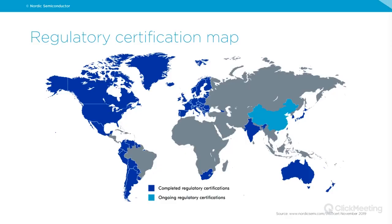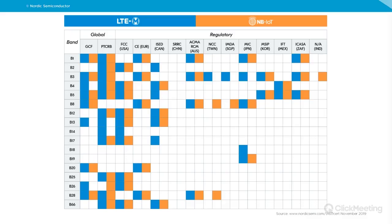Certifications are really important for cellular IoT. Our regulatory certification map shows dark blue where we have regulatory certification for LTE-M and/or NB-IoT, and lighter blue where certifications are ongoing. We have more than 20 bands covered and are approaching worldwide coverage. You can visit our website to read more about our certifications and plans.